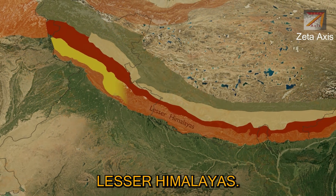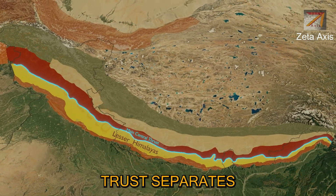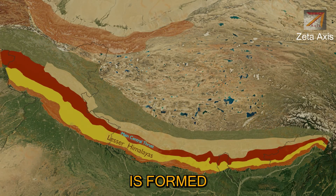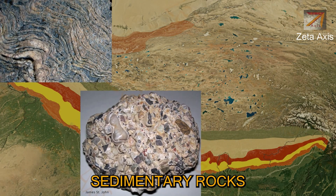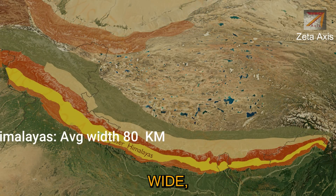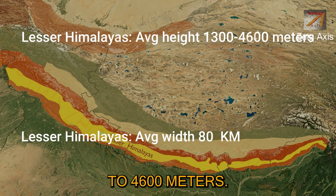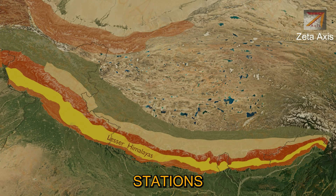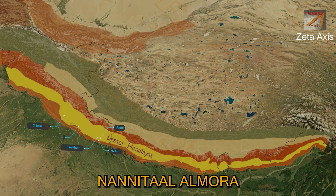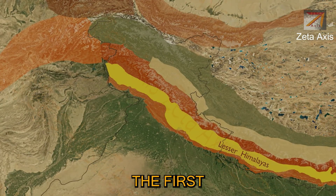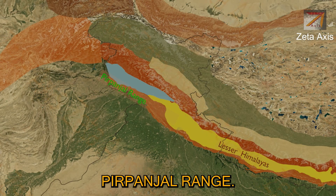Lesser Himalayas are separated from Greater Himalayas by the Main Central Thrust. Lesser Himalayas is formed of metamorphosed sedimentary rocks and minor volcanic and granitic rocks. It is about 80 km wide with an average height of 1300 to 4600 meters. Lesser Himalayas houses some of the famous hill stations of India like Shimla, Mussoorie, Ranikhet, Nainital, Almora, and Darjeeling. Lesser Himalayas can be further divided into sub-ranges, the first and most important being the Pirpanjal range.